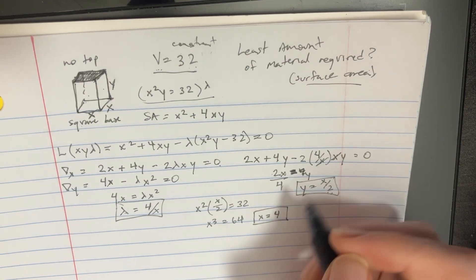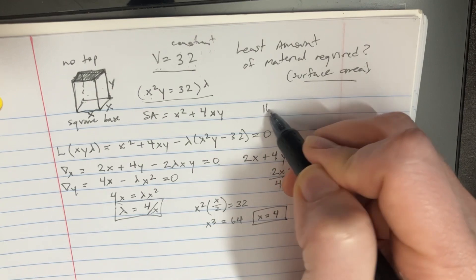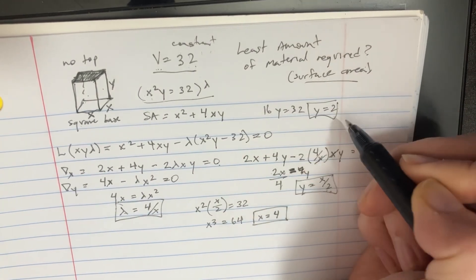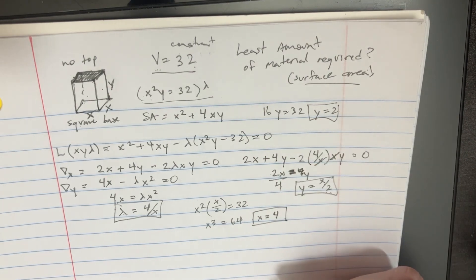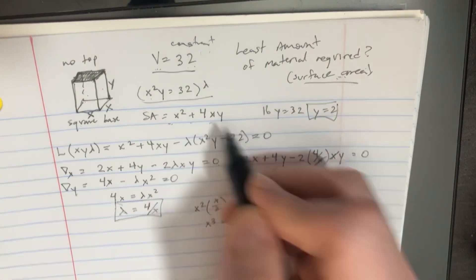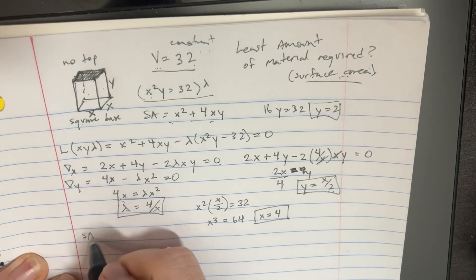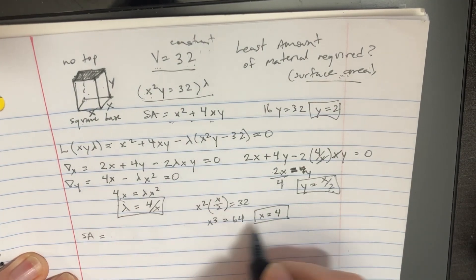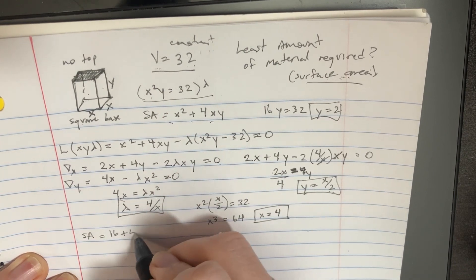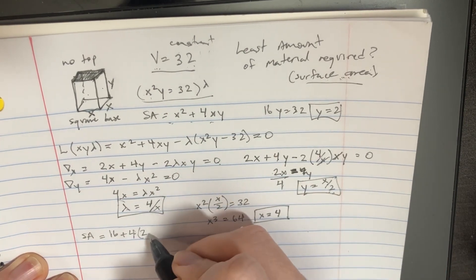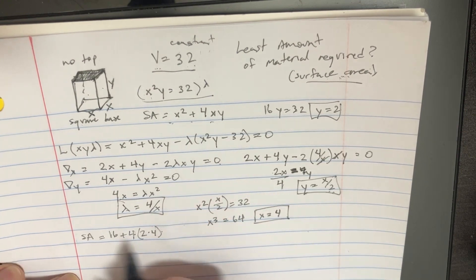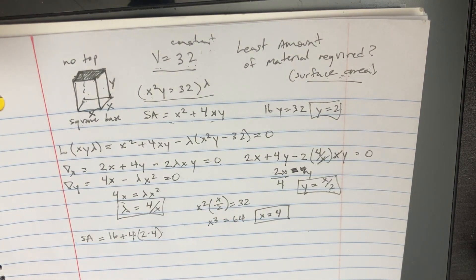And when we plug that back in there, we'll get 16y equals 32, so y equals 2. And if we want to try to solve for the surface area now, we'll just plug that into there. So the surface area of the box is going to be 16 plus 4 times 2 times 4, which is going to be 32 plus 16, which is 48.